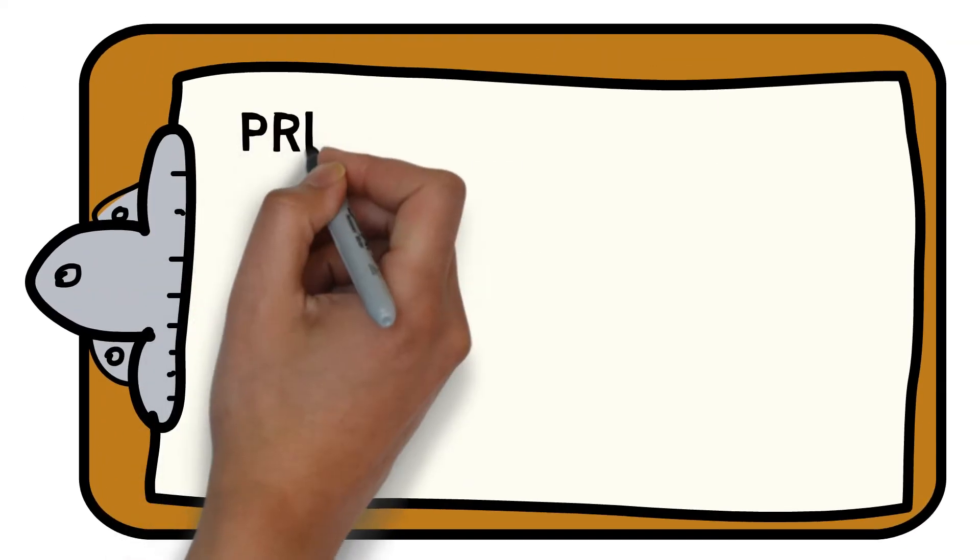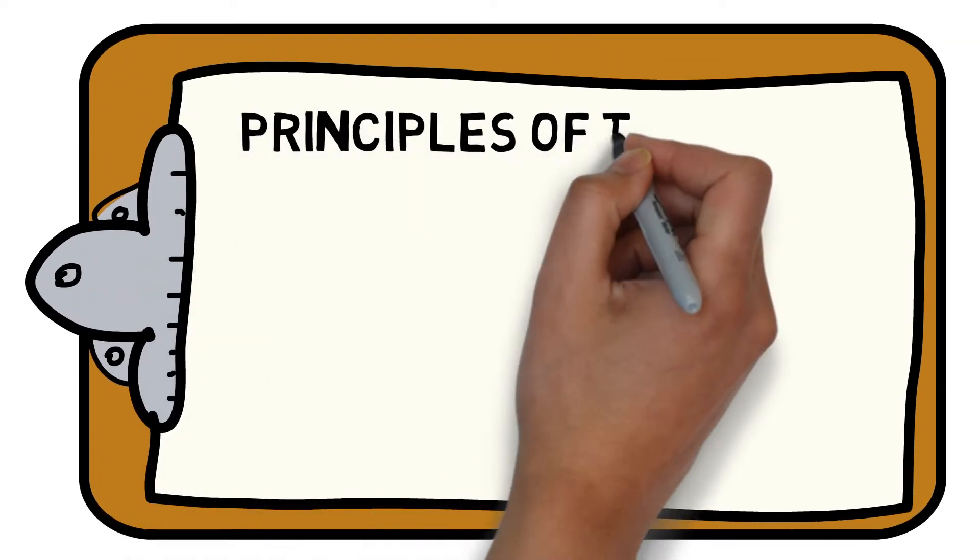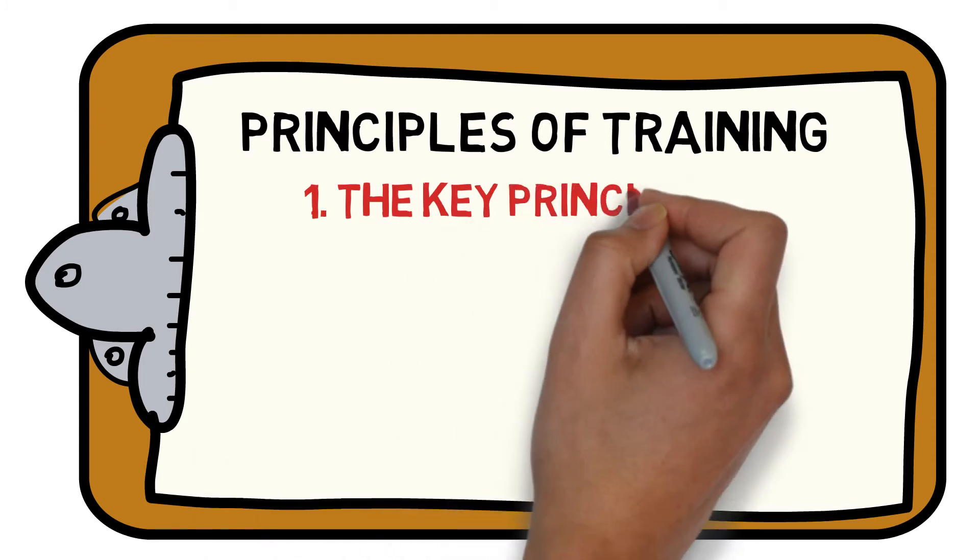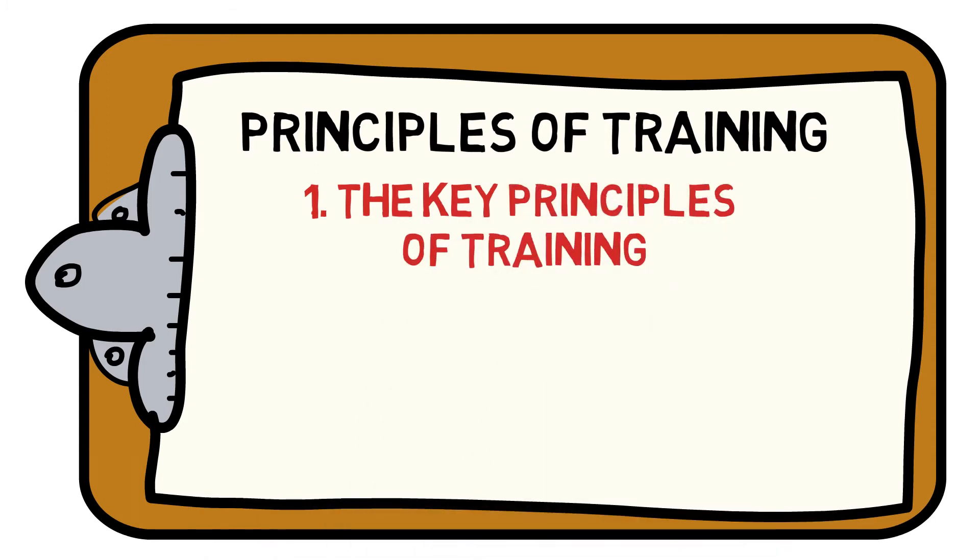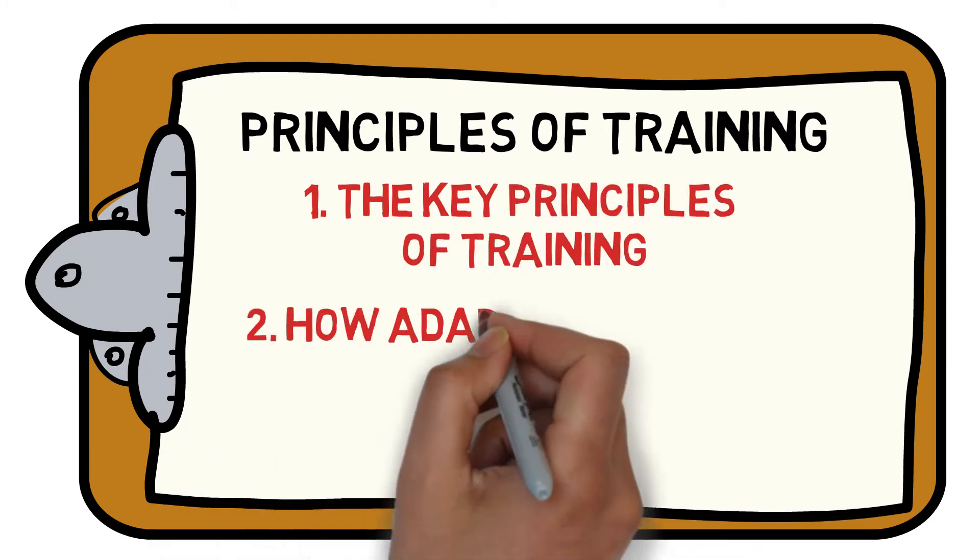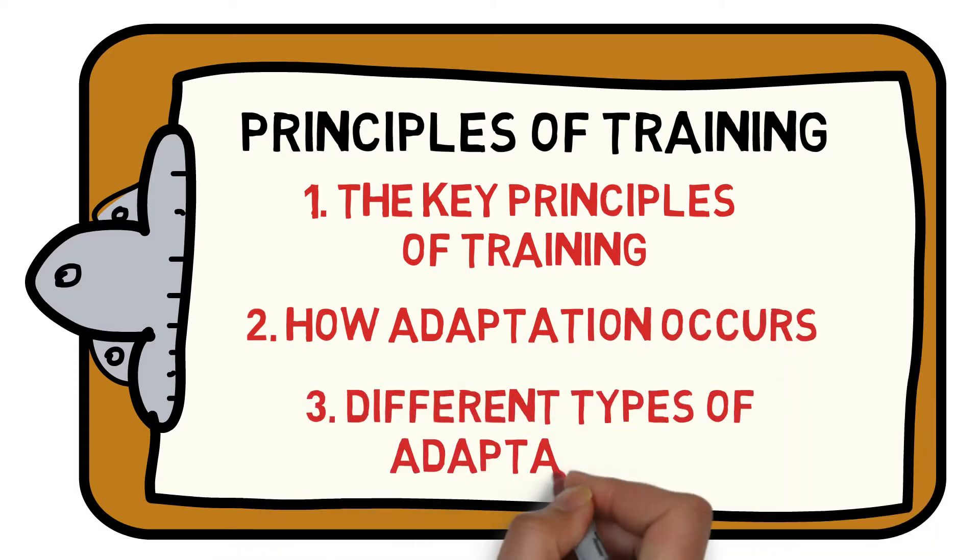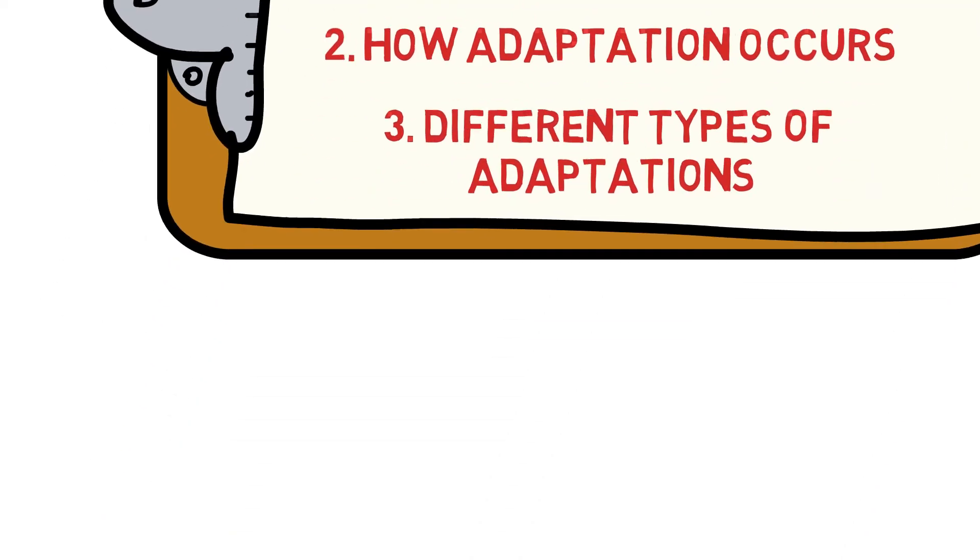Welcome to the Sports Science Hub's guide to everything you need to know about the fundamentals of the principles of training. We will help you understand the three key principles of training, how adaptation occurs, and the different types of adaptations achieved through training. Let's get started.